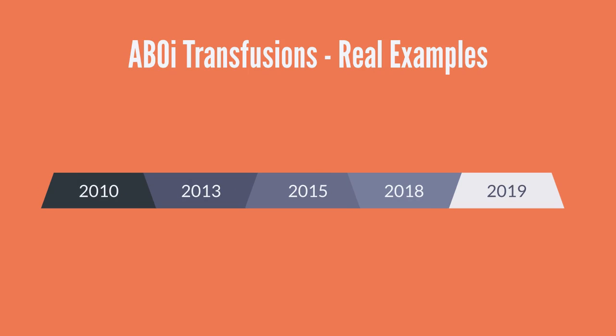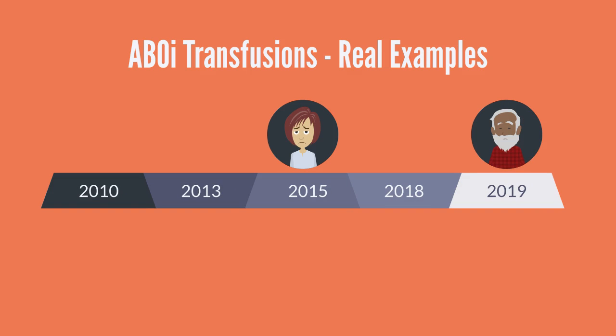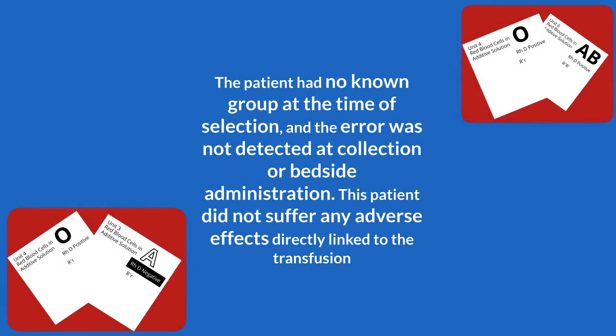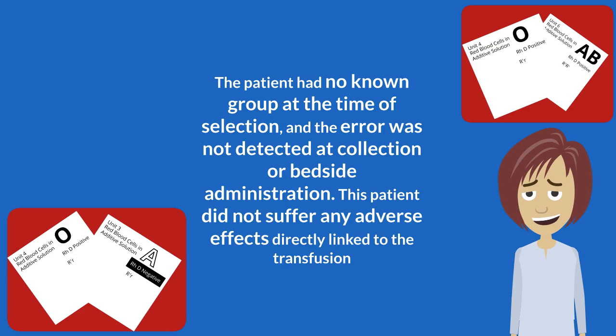The following are examples of real ABOI transfusions reported to SHOT during the past 10 years. In 2019, a component selection error resulted in a unit of group A red cells being transfused to a group O patient. The patient had no known group at the time of selection, and the error was not detected at collection or bedside administration. This patient did not suffer any adverse effects directly linked to the transfusion.